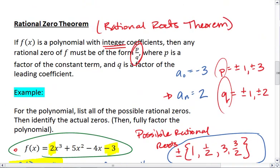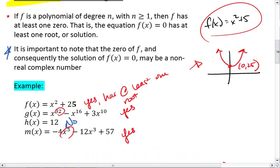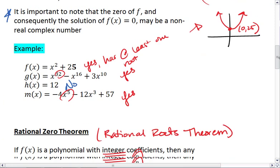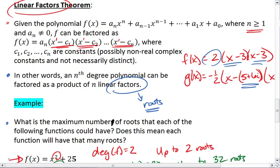While the fundamental theorem of algebra tells us that we will have at least one root. So by the fundamental theorem of algebra, our polynomials have at least one root. And by the linear factors theorem, we know the maximum number of roots possible for each function.